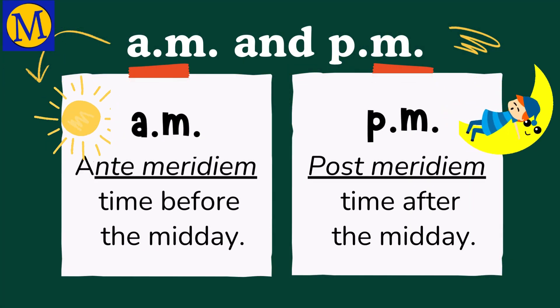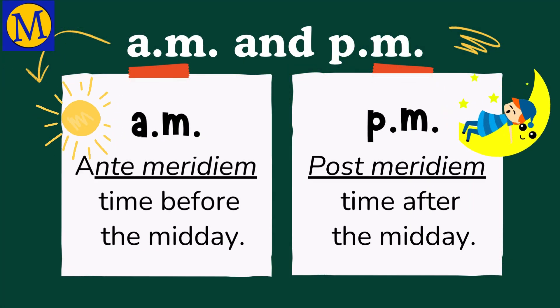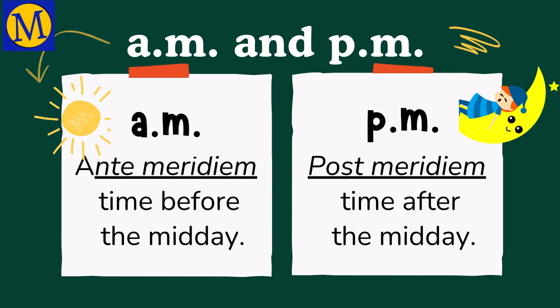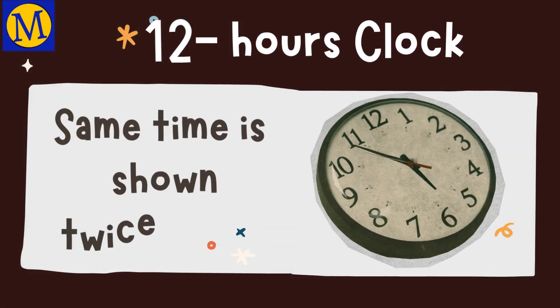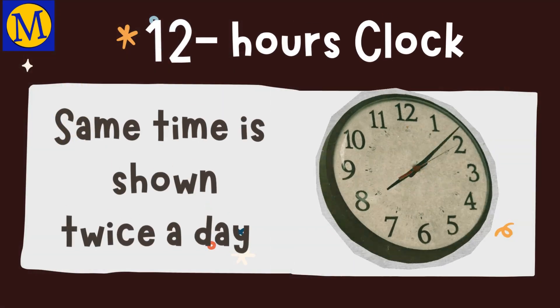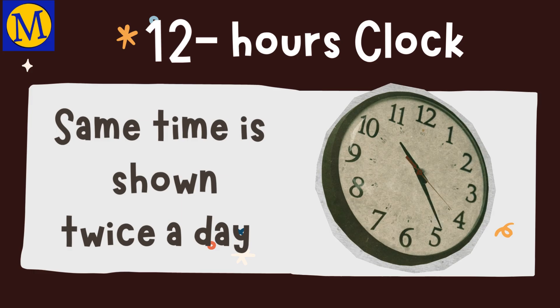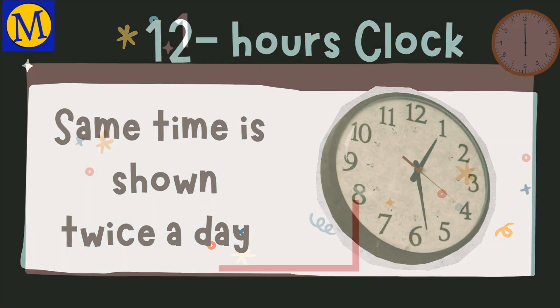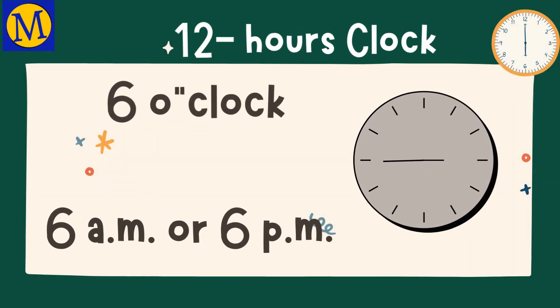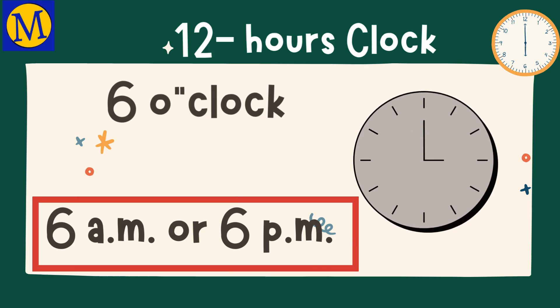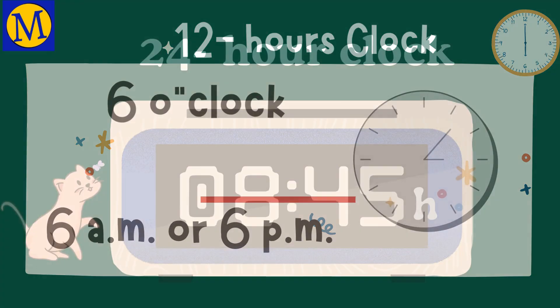A 12-hour clock shows the same time twice during the day. So 6 o'clock can be 6 a.m. or 6 p.m. To avoid that confusion, we use a 24-hour clock.